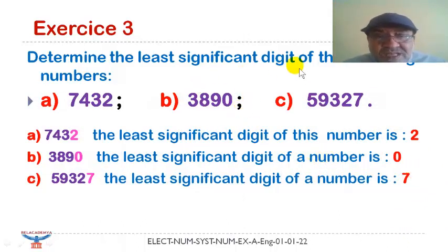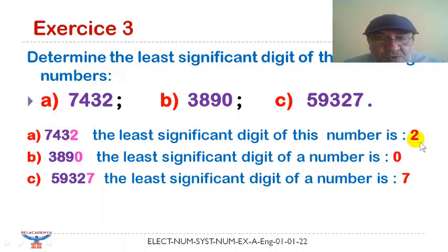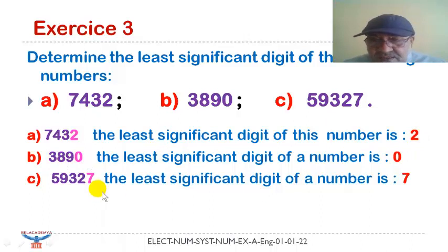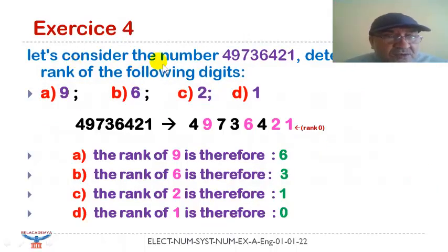Now we have to determine the least significant digit of the following numbers. For the first one, it is two. For B, it is zero. And finally, for the last one, it is seven.